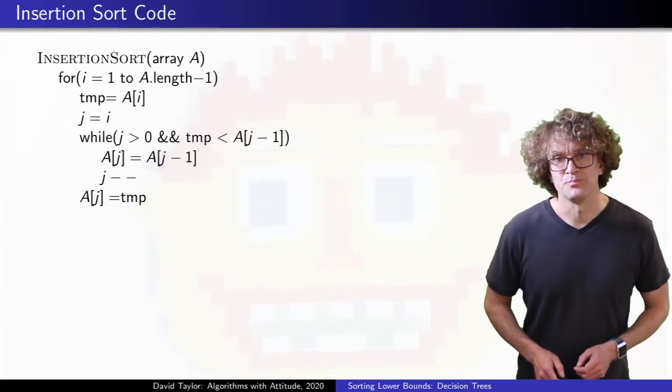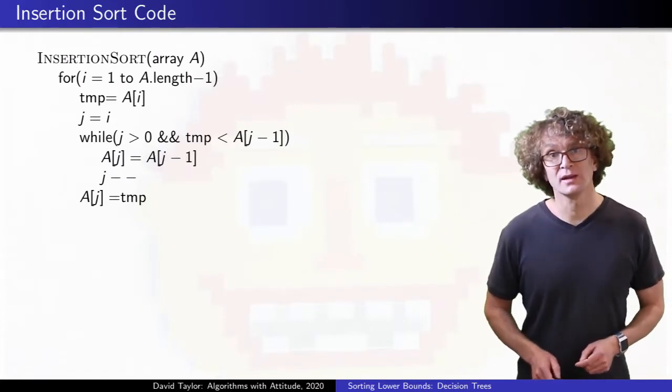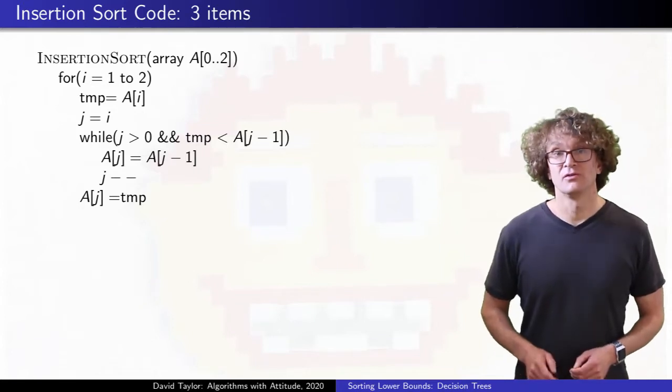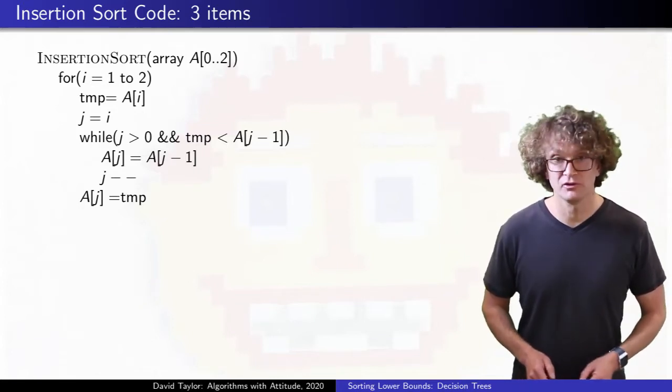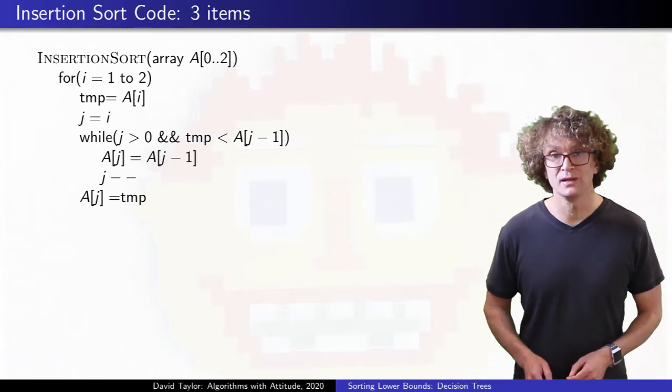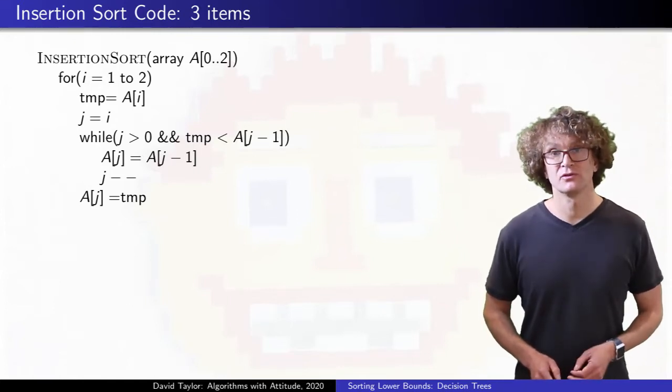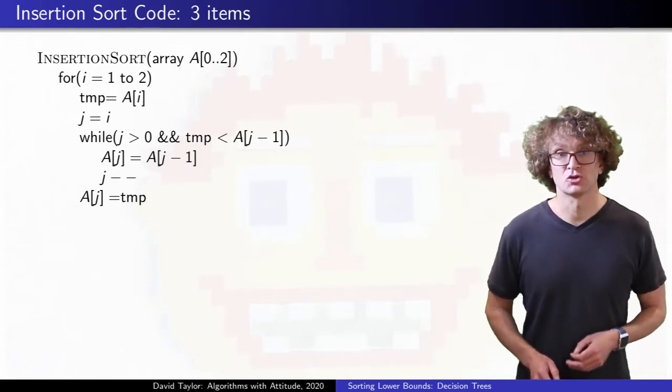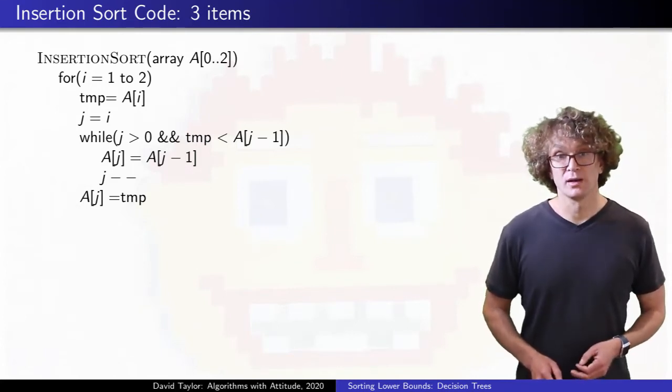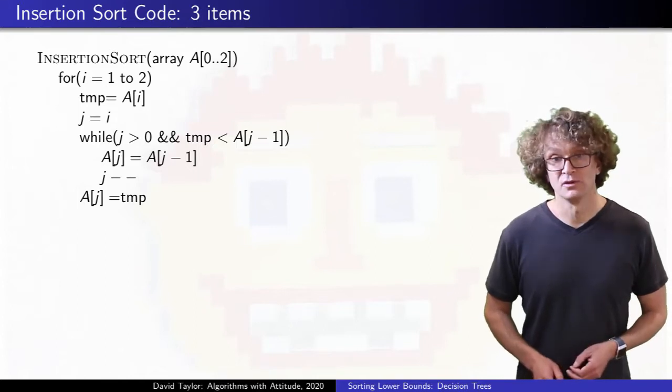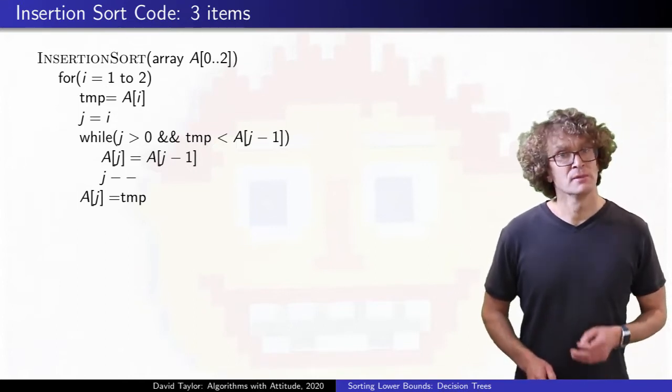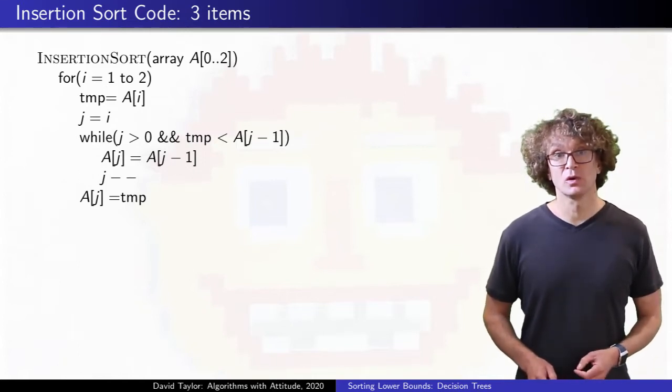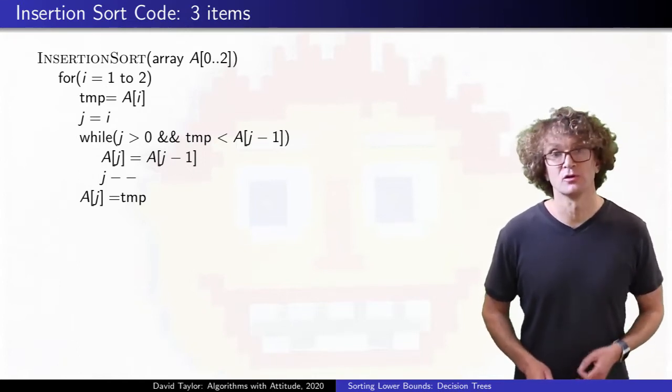Here is the insertion sort algorithm. Let's consider running that algorithm on an array with just three items. If that code is running, the outcomes of the comparisons between the elements from A tell us everything there is to know about what is happening in the code. So if the first comparison comes out true, the first two items of the array will get swapped, otherwise they won't. Either way, I won't enter that while loop a second time until we are in the second pass of the outer for loop.